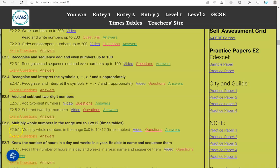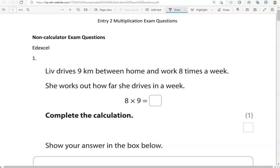In this video, we'll go through exam questions that cover the criteria: multiply whole numbers in the range of 0 times 0 to 12 times 12 times tables. You can locate the questions on the massmaths.com website under Entry 2. The questions come from different exam boards. We'll start with the non-calculator questions and then move to the calculator questions.